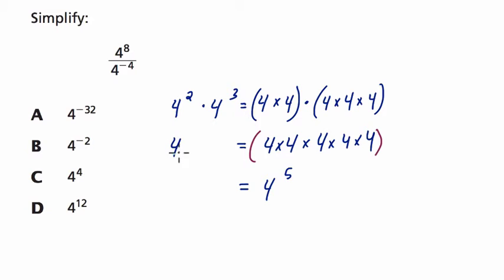Now, if we go back to our original expression, we have 4 squared times 4 to the 3rd. So I noticed something, and maybe you did too. Look at these exponents. What's the connection between 2 and 3 and 5? Well, you might notice that 2 plus 3 equals 5.